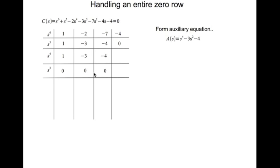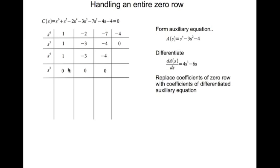We go ahead and form the auxiliary equation. The auxiliary equation is formed from the row above the zero row. It is always the case that the zero row will occur at an odd power of s, so you go to the even power just above — that's s^4. The coefficients of s^4, s^2, and the constant form the auxiliary equation. You differentiate it with respect to s, take the coefficient of s^3 and the coefficient of s from that derivative, fill them in, and continue as if nothing happened.